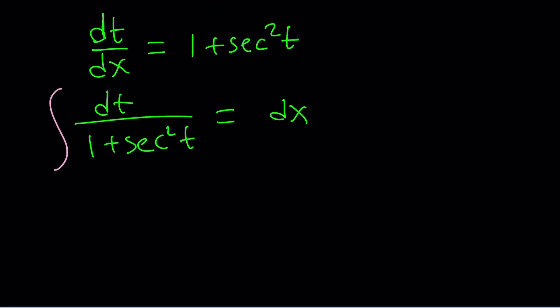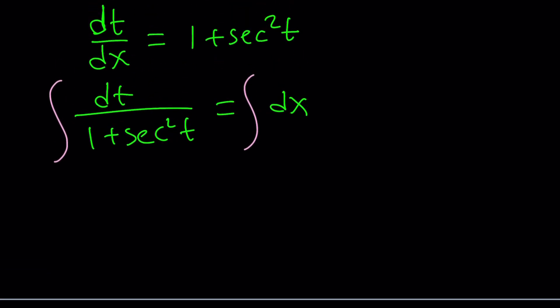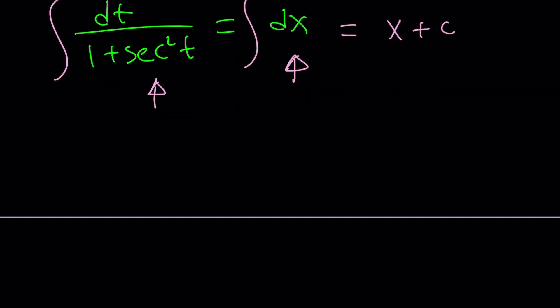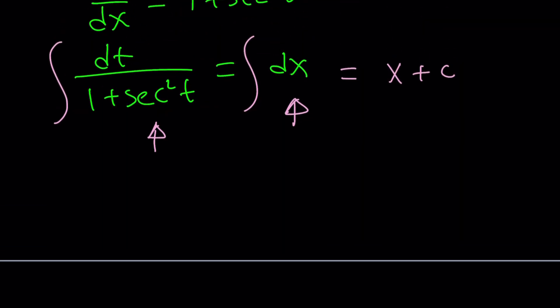At this point, once you separate the variables, integrate both sides and you should get the answer. If you had 1 + sec²t in the numerator, that would be like maybe 2 + tan²t, and tan²t can be integrated. Let's go ahead and try to integrate the left-hand side because the right-hand side is just going to be x + a constant.